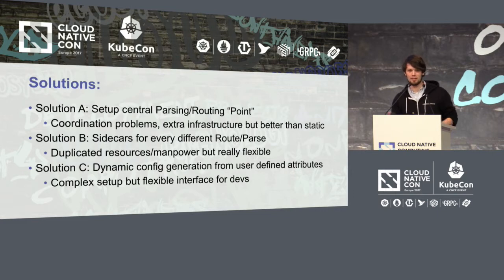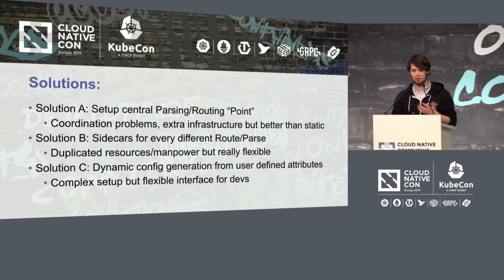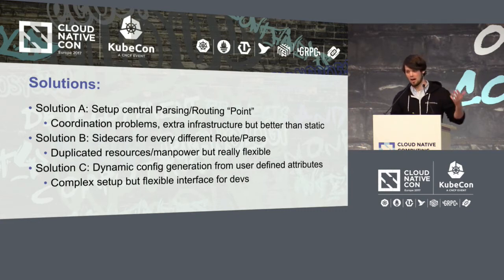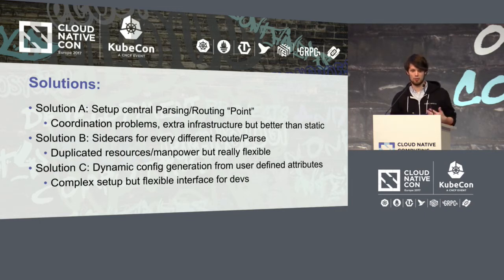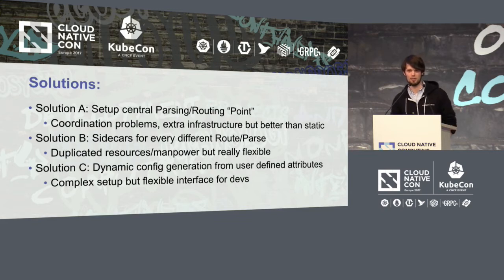There are common solutions for this. The first solution is to put an extra Fluentd or Logstash in front of it. This makes the coordination problem a bit better, but then you have an extra piece of infrastructure which is just extra overhead. The second common solution is to let every team roll their own solution, which gives developers huge flexibility and they can do whatever they want, but on the downside you waste a lot of resources and especially manpower since everyone has to reinvent the wheel.